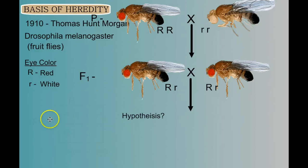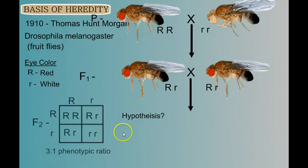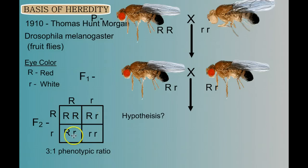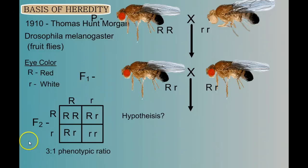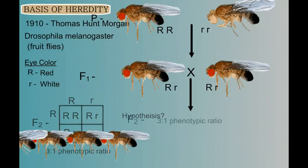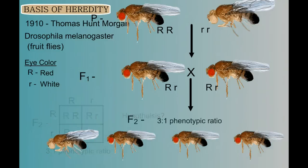Hopefully you learned in our past videos that we can easily set up a Punnett square, and we should see a 3 to 1 phenotypic ratio — red eyes to one white-eyed. So let's see what Morgan found. It turns out that he did get a 3 to 1 phenotypic ratio.